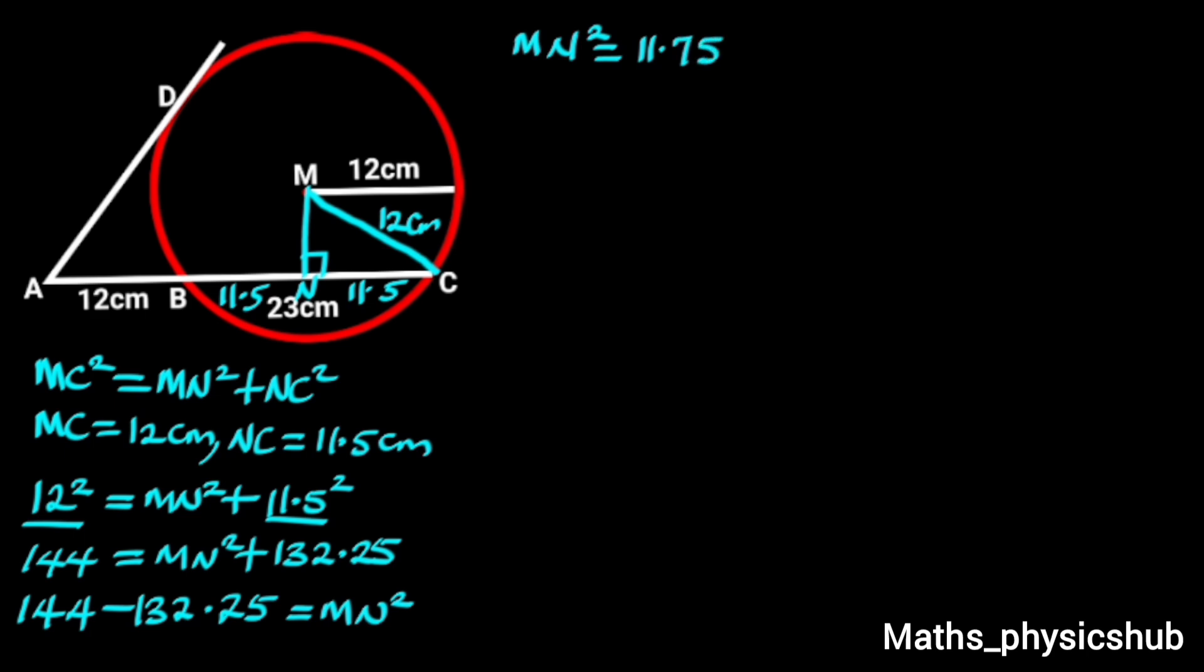Next we take the square root of both sides. It follows that MN equals square root of 11.75, which is approximately 3.4 cm.